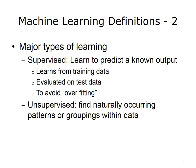In supervised learning, machine learning algorithms learn to predict a known output that they learn from training data and have their effectiveness evaluated on test data. The use of training and test data is done to avoid overfitting the training data. For further reading on the concept of overfitting, see the reference slides at the end of this presentation.